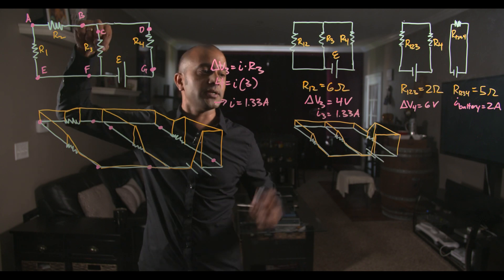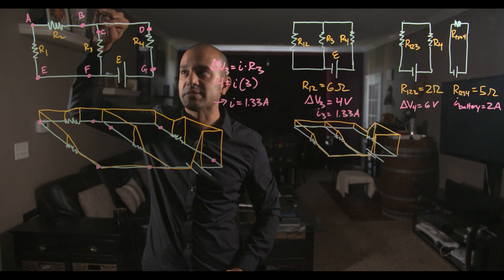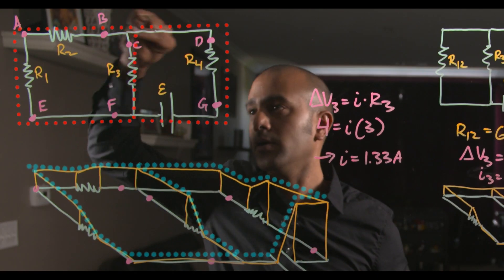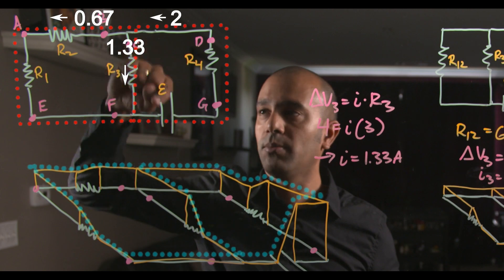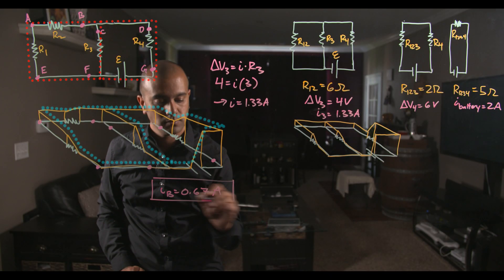Through resistor 3, it's 1.33 amps. So the remainder of the incoming 2 amps has to go through this branch over here. In other words, 2 amps minus the 1.33 is 0.67 amps through point B.